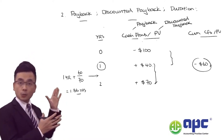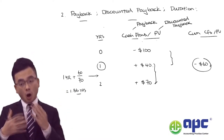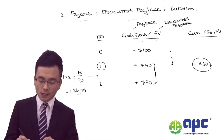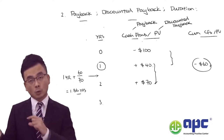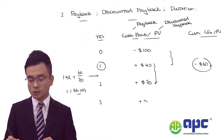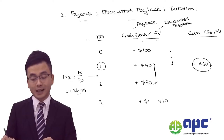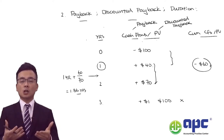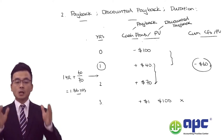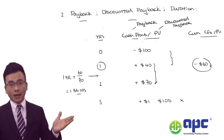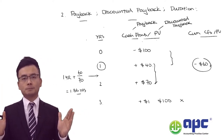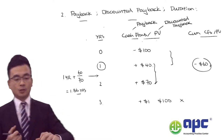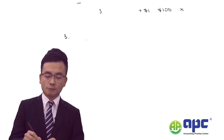This is absolutely different from the duration concept. When looking at payback or discounted payback, you only determine when you've paid your money back — you don't care about cash flows beyond the payback point. Using payback or discounted payback, you determine when you pay your money back and stop there — it doesn't really consider cash flows beyond the payback point, and this is why we need to introduce the duration concept.